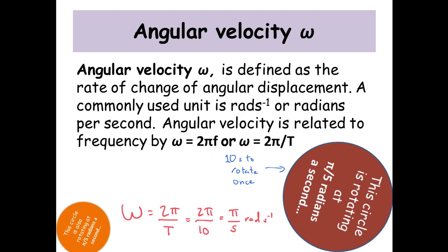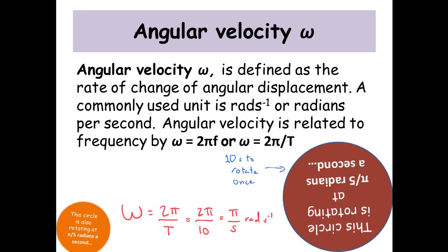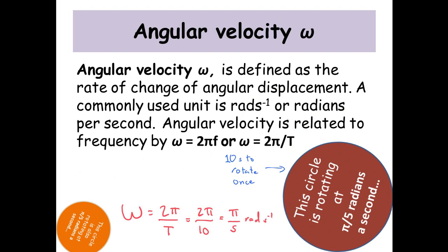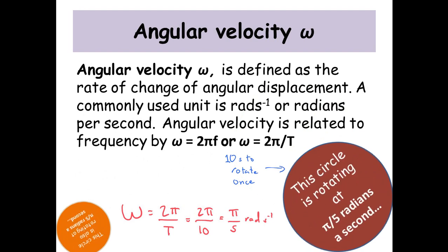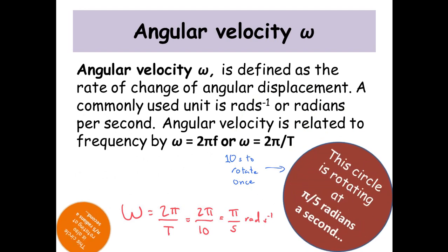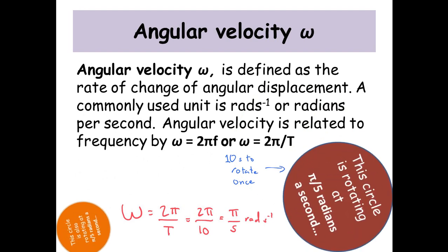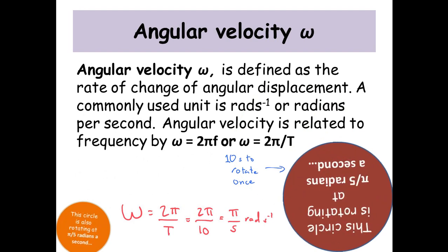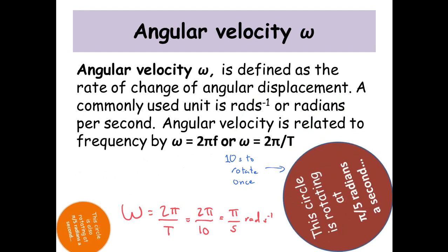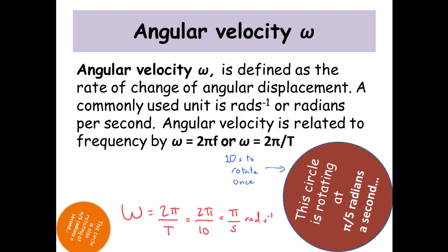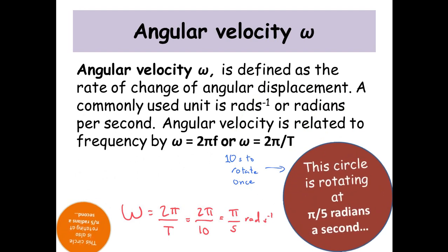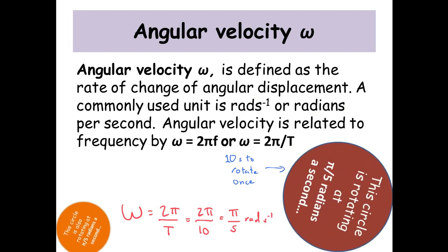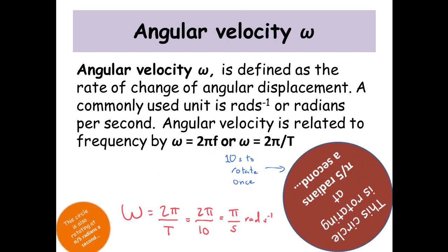Angular velocity — well, it's defined as the rate of change of angular displacement. Commonly it's given as radians per second. Angular velocity is related to frequency by omega equals 2πf, or omega equals 2π over T, where T is the time it takes for one complete rotation.